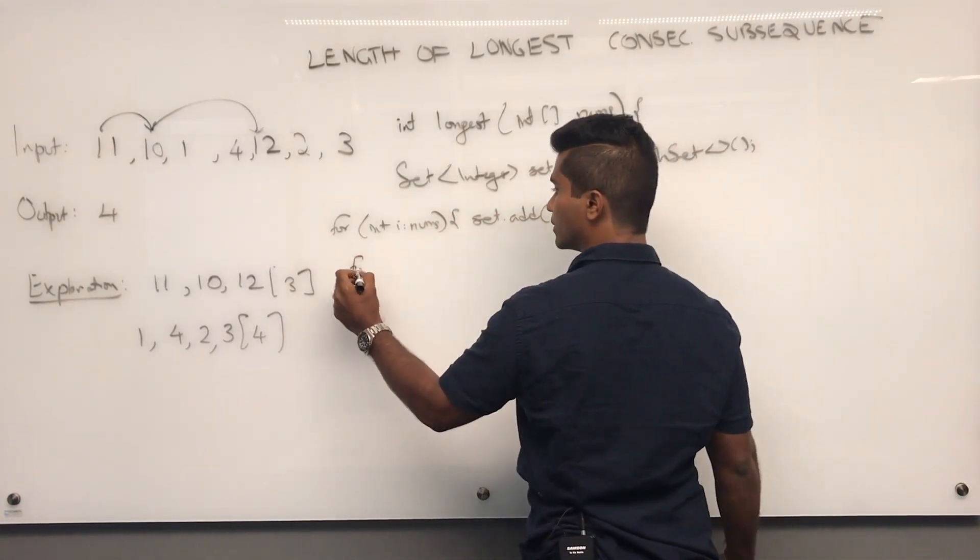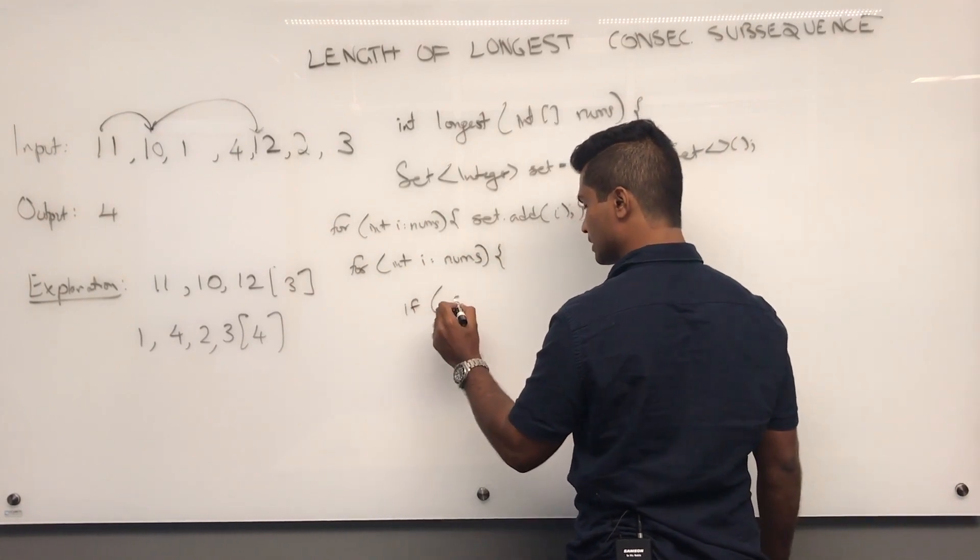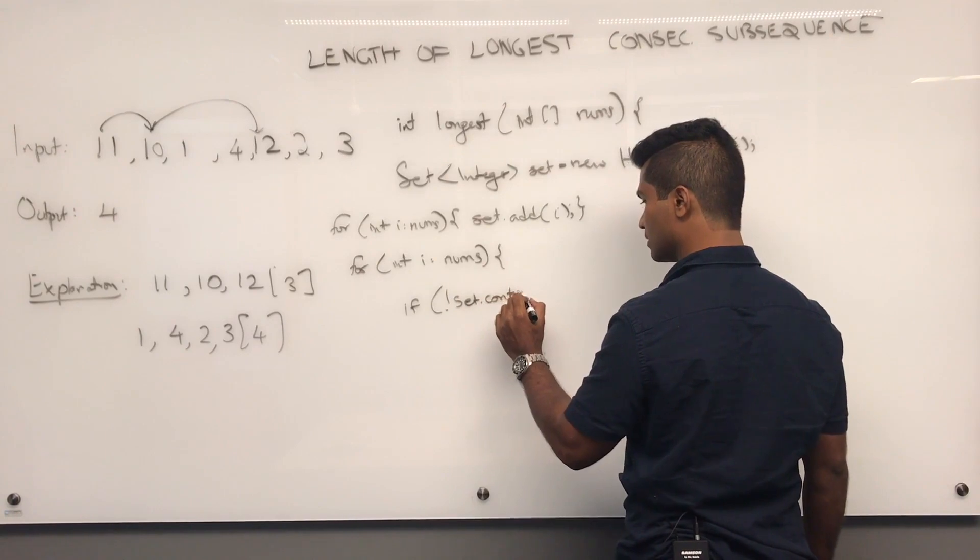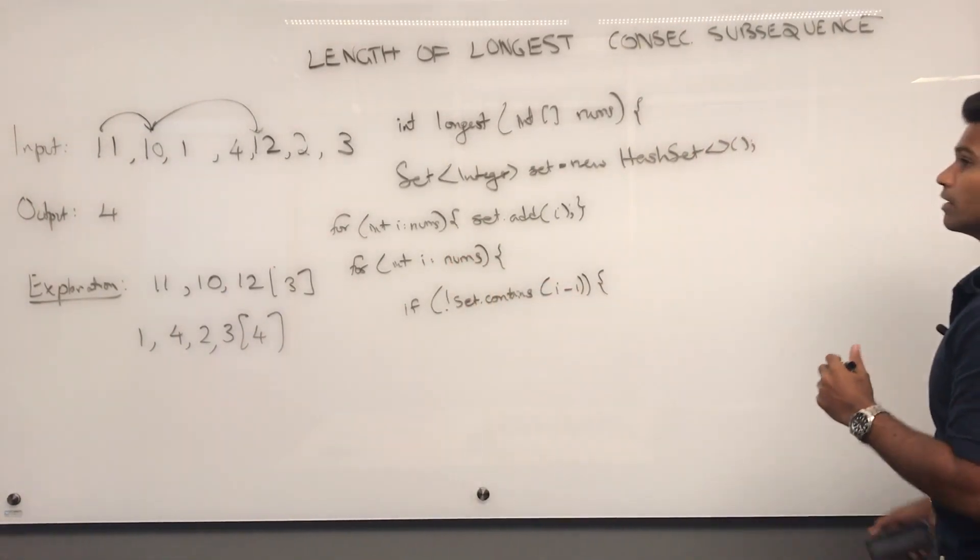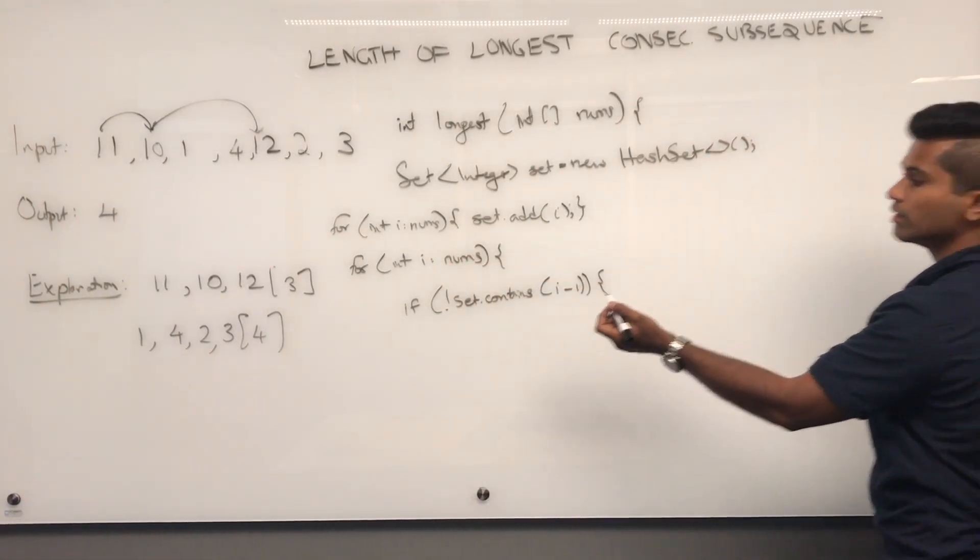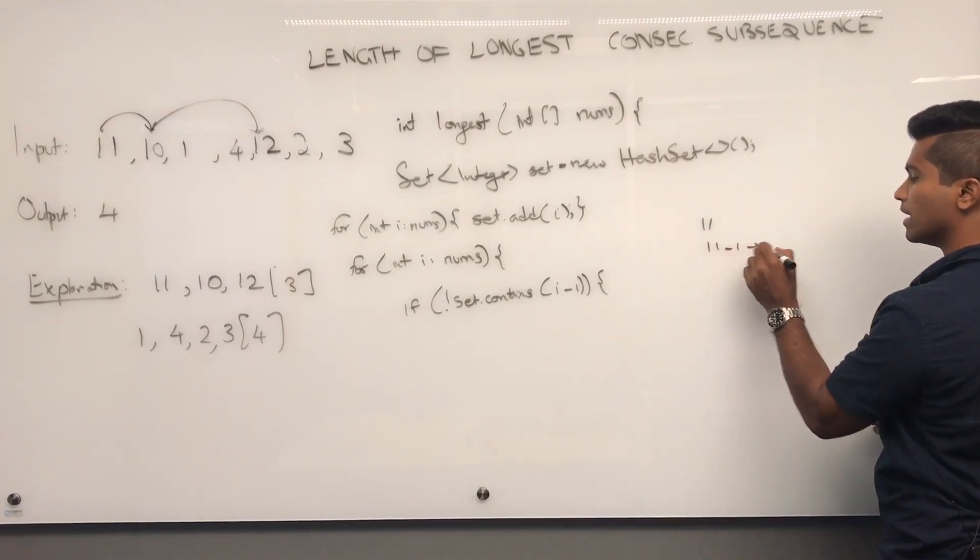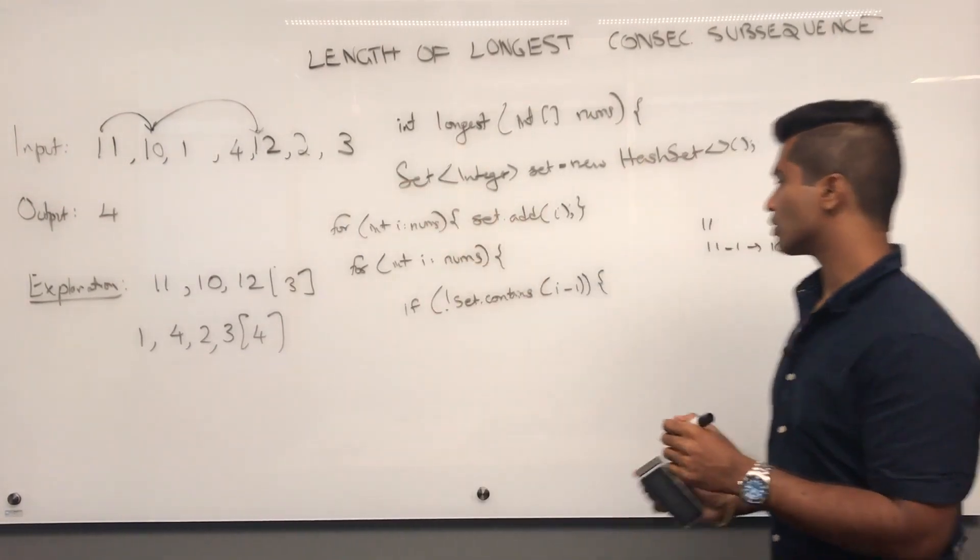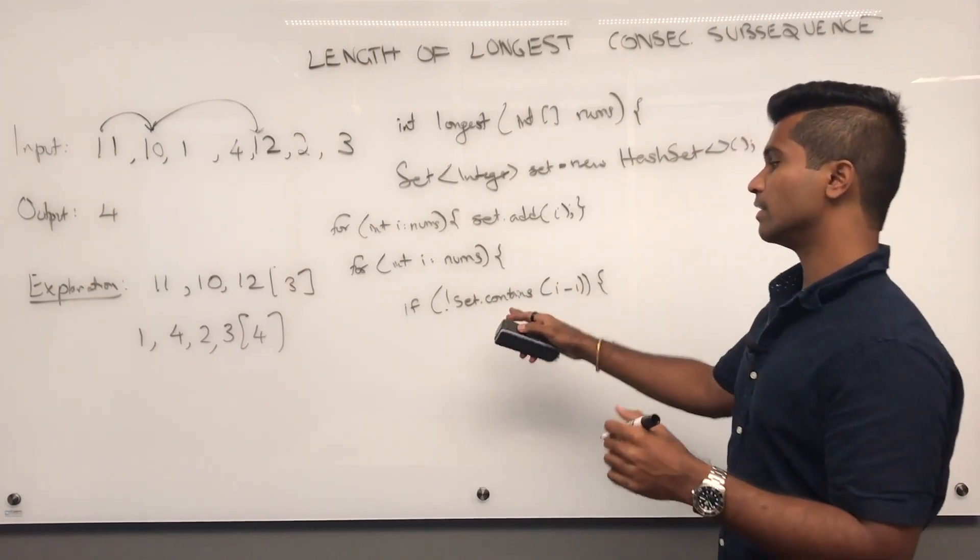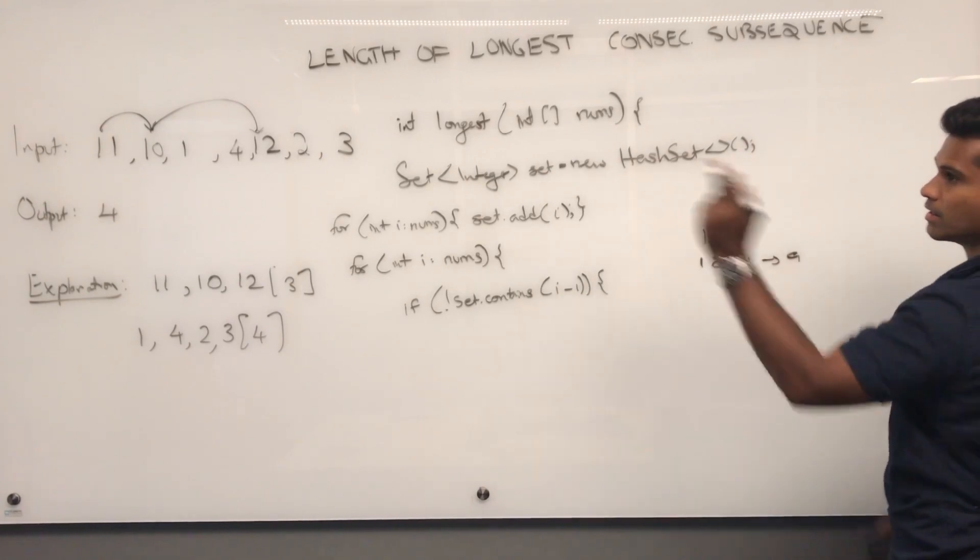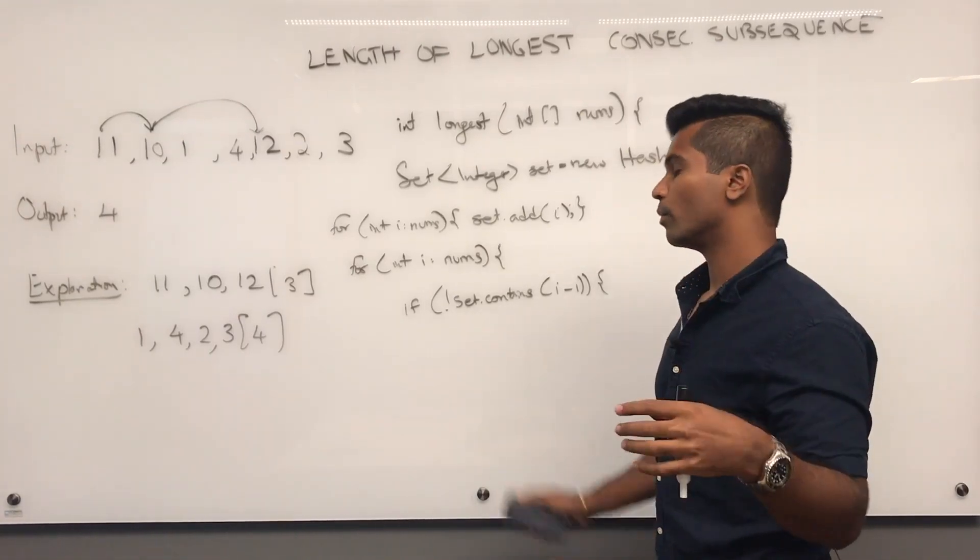Now, we're going to iterate through this nums array once more. And we're going to see if set doesn't contain i minus 1. So, in the beginning, we start with 11, right? 11 is here. 11 is going to see if there's 11 minus 1, 10. 10 does exist in the set. So, it's not going to do anything. Then, we move on to 10. Now, 10 checks 10 minus 1, 9, is not in the array. So, we are going to start building a logical subsequence with the 10.